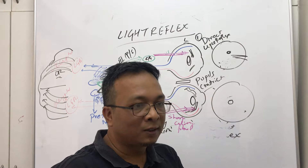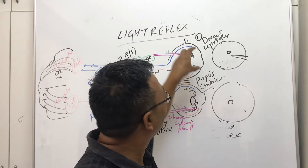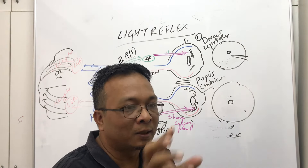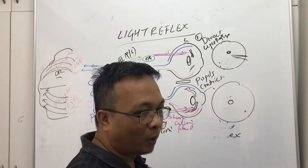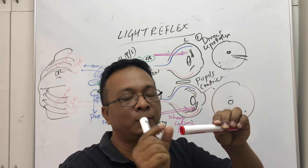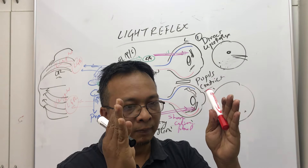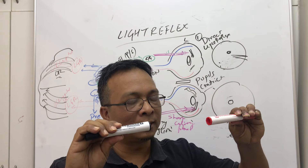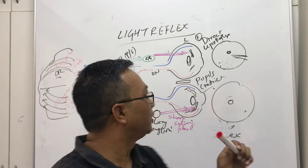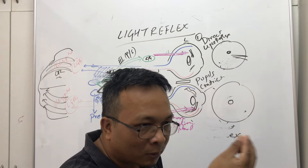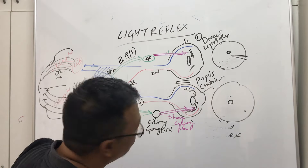When the short ciliary fibers stimulate the iris and ciliary body, they constrict. When they constrict, the pupil becomes smaller. The pupil is not an anatomical structure — it is a gap between the two sides of the iris. When the iris comes close the pupil becomes small; when the iris goes back the pupil is dilated. So when parasympathetic fibers stimulate the ciliary body, the iris comes close and the pupil becomes smaller, meaning less light enters the eye.